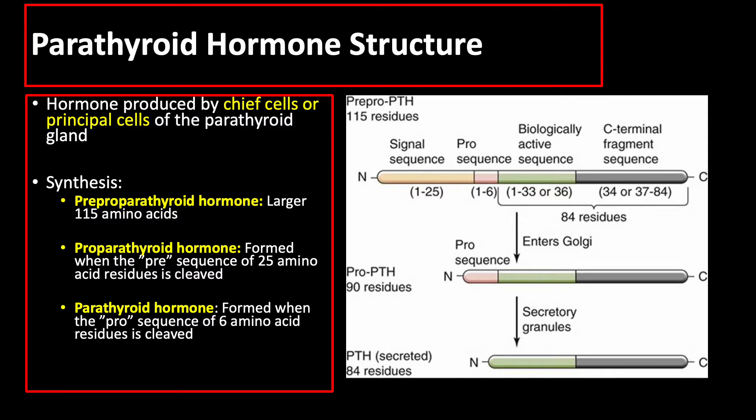Then finally, the mature hormone, the parathyroid hormone, is formed when the pro-sequence of 6 amino acid residues is cleaved in the Golgi apparatus. This parathyroid hormone is stored inside secretory vesicles.